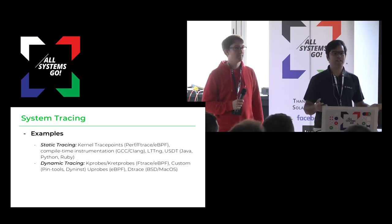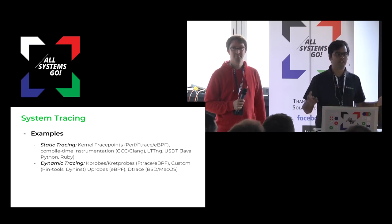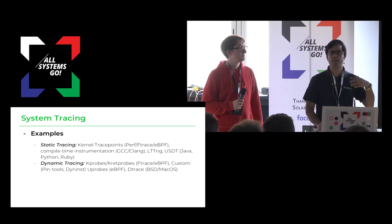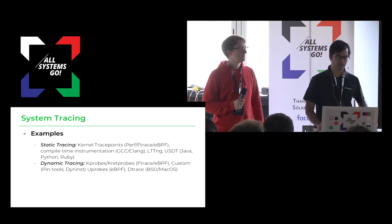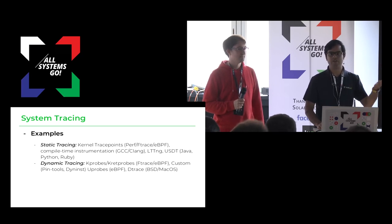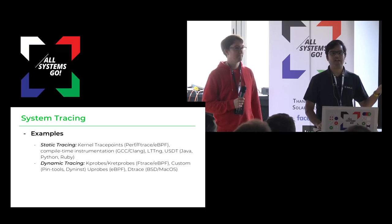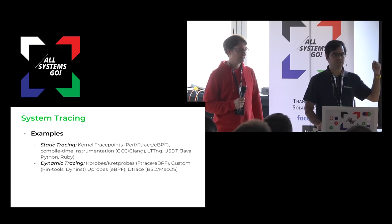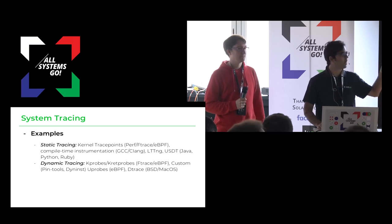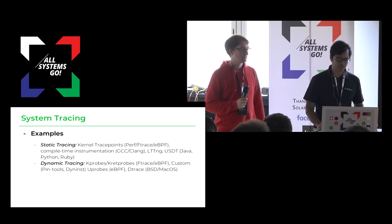Tracing can be static or dynamic. Static tracing infrastructure is already in the kernel — kernel trace points with perf, ftrace, and eBPF all support static tracing. If you're writing your own applications, you can have compile-time instrumentation via GCC flags like -pg, or profile-guided instrumentation. Other tools like LTTNG provide this, and USDT gives you trace points already built into the JVM, Python's interpreter, and Ruby's interpreter.